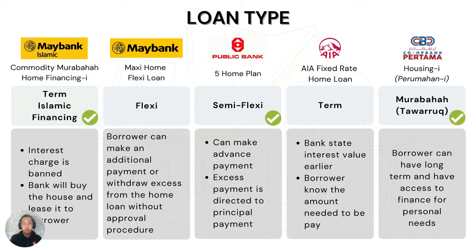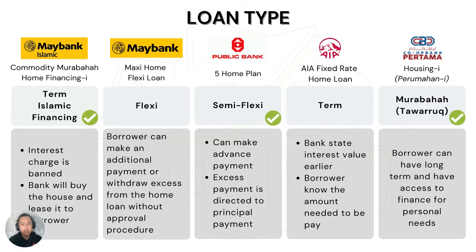Now we will look at each institution's loan type. First is Maybank Islamic, which uses Islamic financing terms. What is interesting about this loan is that there is no interest charge. It is stated that the bank will purchase the house first as the legal owner and later the bank will collect payment from the borrower every month. For the Maxi Home Flexi loan in Maybank, it allows borrowers to make additional payments or withdraw any excess home loan funds without an approval procedure.